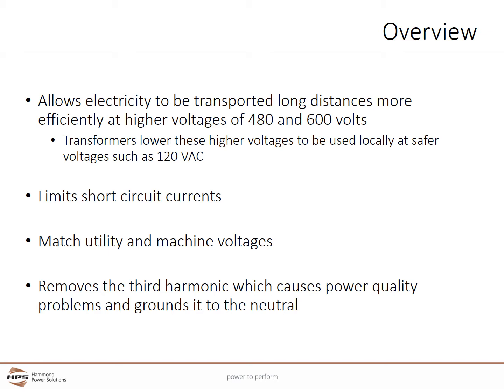Isolation transformers limit short-circuit currents during the event of a fault to improve the performance of fuses and circuit breakers. Transformers can match utility and machine voltages, and transformer taps can fine-tune the local voltage. Transformers with a Y secondary can remove third harmonic currents, which cause power quality problems, and ground these currents to the neutral.